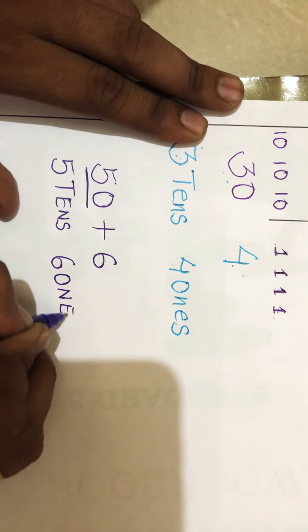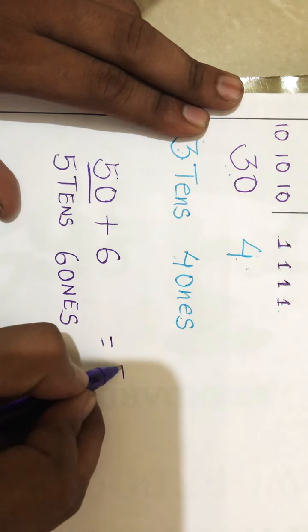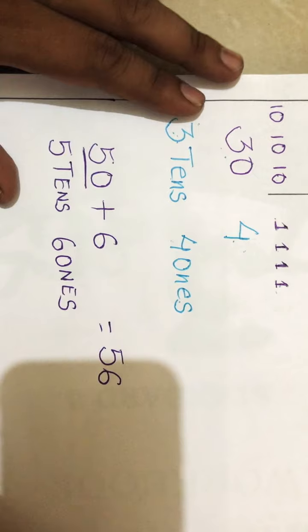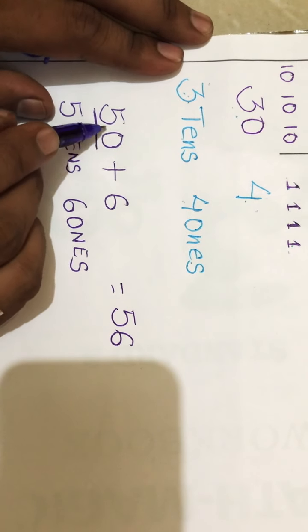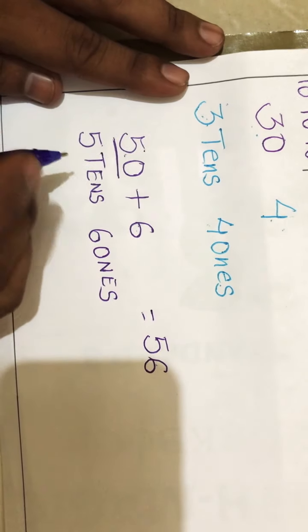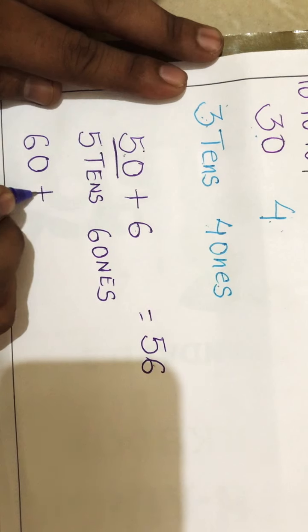You can make a number also with the expanded form. The place value - you will tell me the answer will be 56. So you can make a number from the expanded form. Same way, one more example: 60 plus...